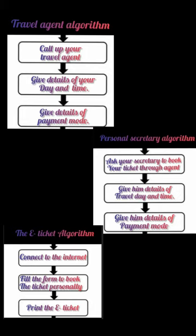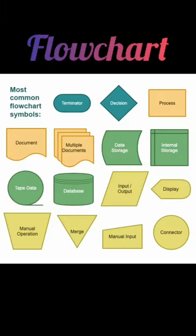These techniques of solving a problem make programming easy. A flowchart is a graphical representation of an algorithm. The steps written in an algorithm can be presented in a flowchart. There are special symbols used for drawing a flowchart. Five symbols are explained in detail.